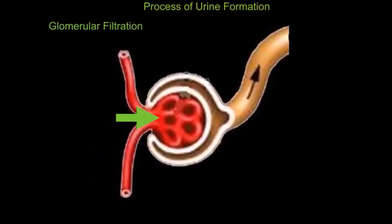Glomerular filtration occurs at the renal corpuscle. Here substances are delivered to the nephron via the afferent arteriole and into the glomerulus. Smaller substances easily diffuse across the membrane of Bowman's capsule, leaving behind larger substances in the glomerulus, which will eventually be moved into the efferent arteriole. The smaller substances now in Bowman's capsule are called the filtrate.